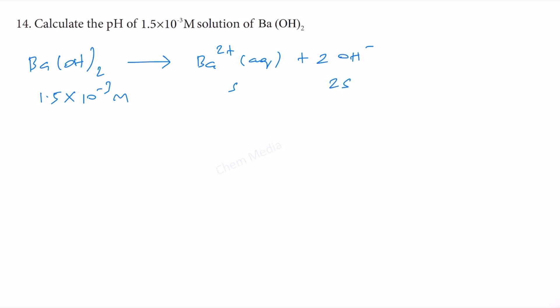That means the concentration of barium 2+ is 1.5×10^-3 molar, whereas the concentration of OH- we have to multiply with a factor of 2. Therefore 2×1.5×10^-3 molar is the concentration of OH-, which equals 3×10^-3 molar.